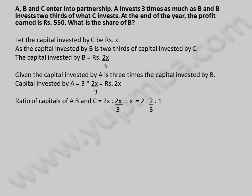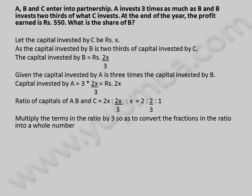Ratio of capitals of A, B, and C is equal to 2X : 2X/3 : X, which simplifies to 2 : 2/3 : 1. Multiply the terms in the ratio by 3 so as to convert the fractions in the ratio into whole numbers.